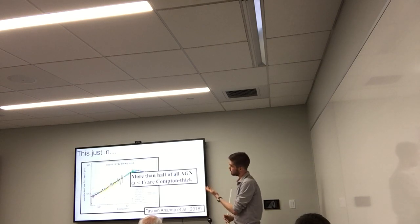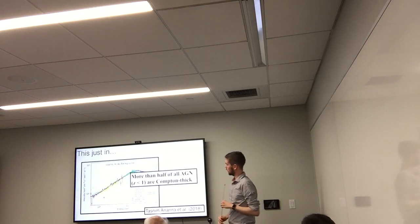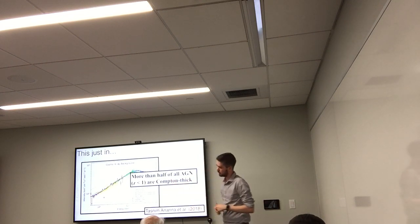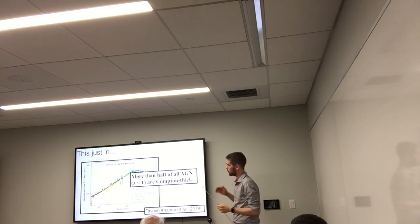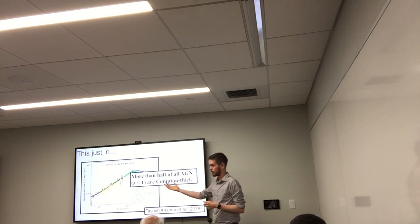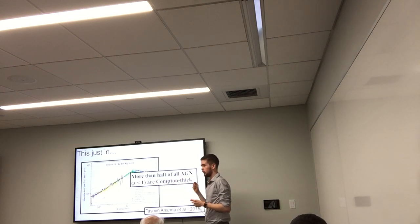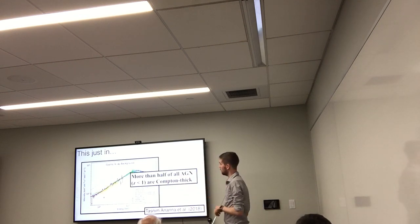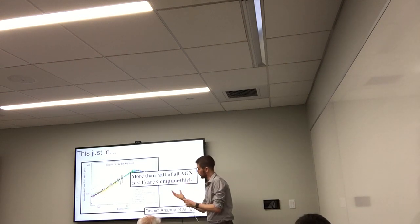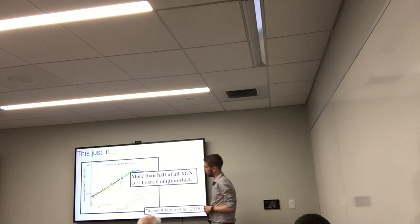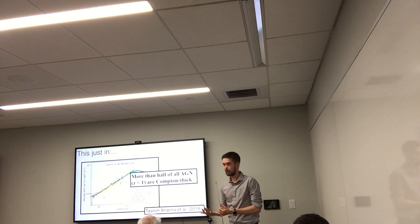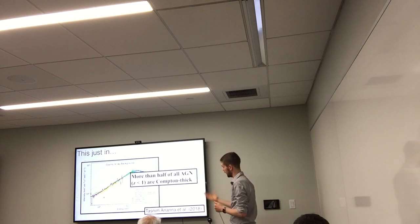Very recently — maybe a couple of weeks ago — there has been a new model used to fit the cosmic X-ray background purely from individual populations of AGN. Their results, using a neural network, have found that within redshift 1, more than half of all AGN are predicted to be Compton thick, which is quite an interesting result.